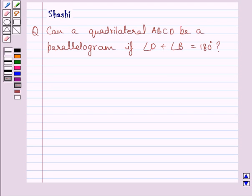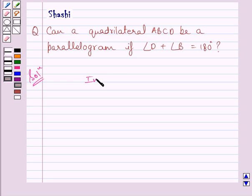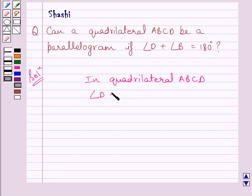Hi and welcome to the session. Let us discuss the following question: can a quadrilateral ABCD be a parallelogram if angle D plus angle B is equal to 180 degrees?